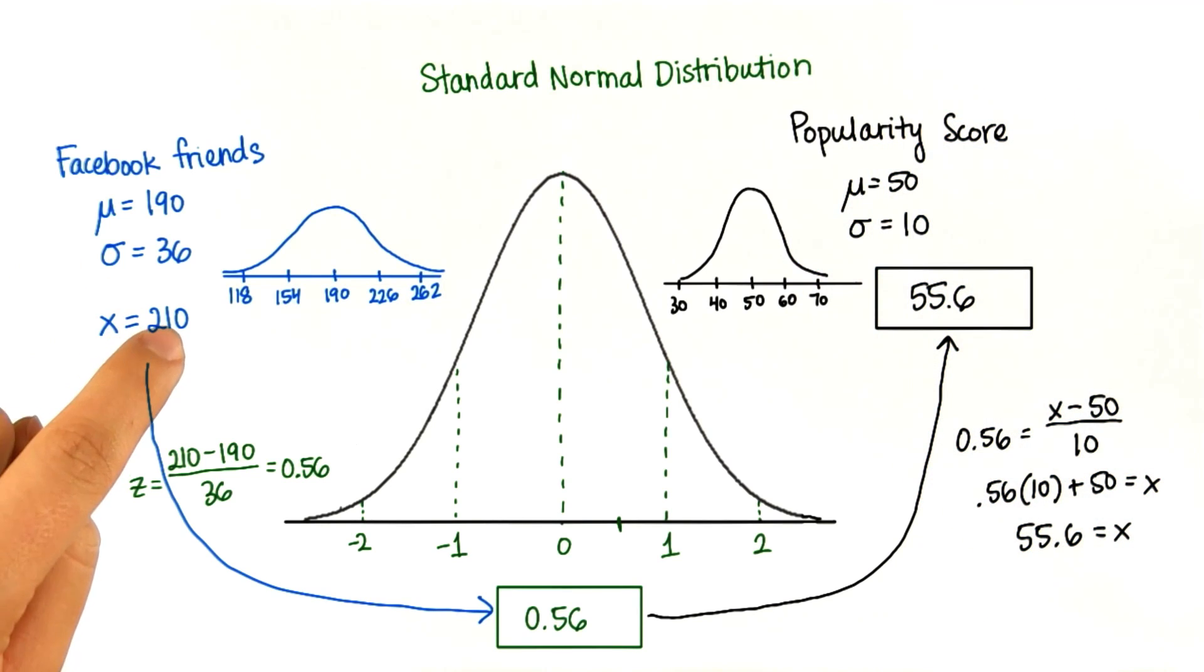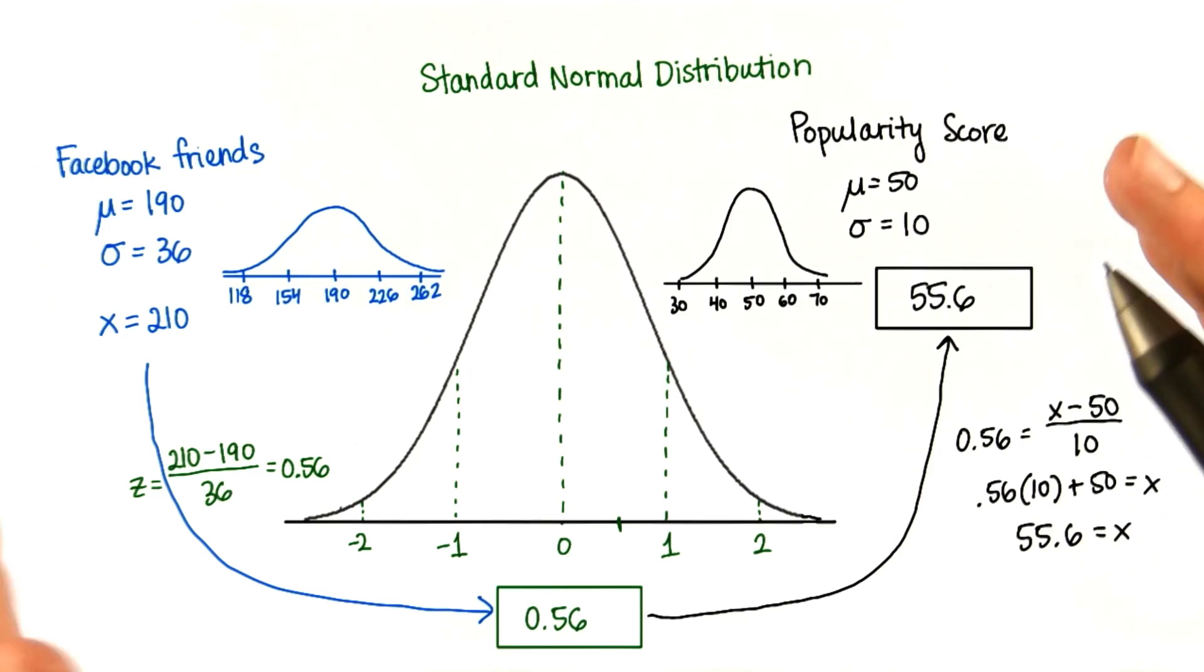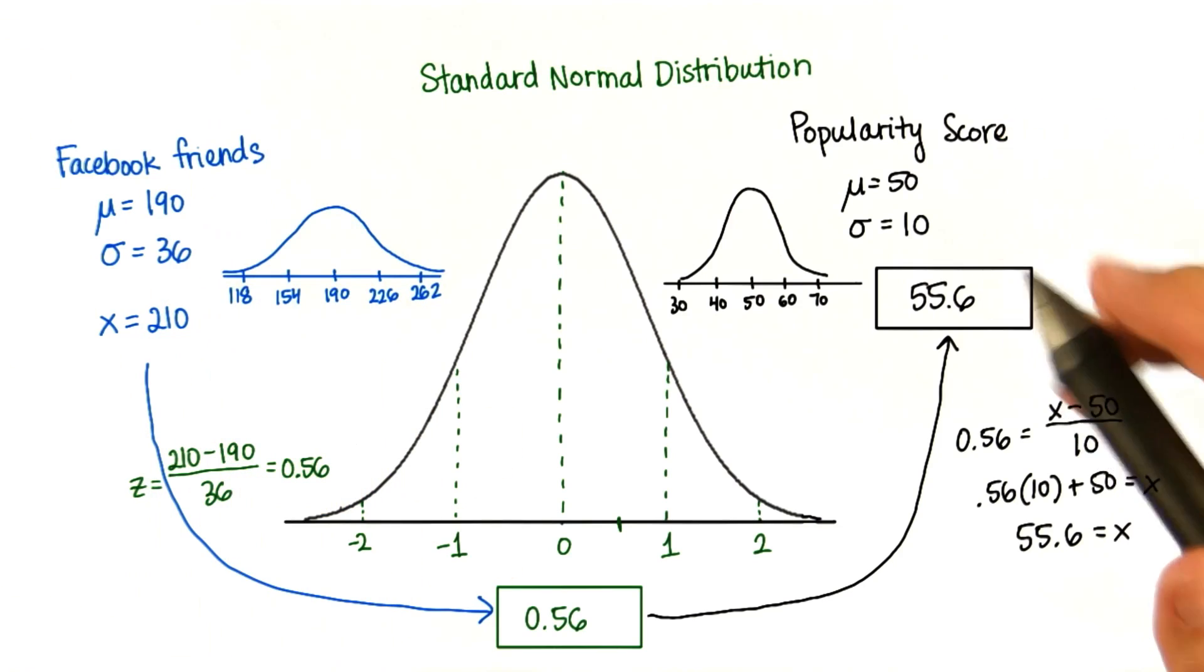The score for each of these distributions corresponds with the same percentage less than that score.